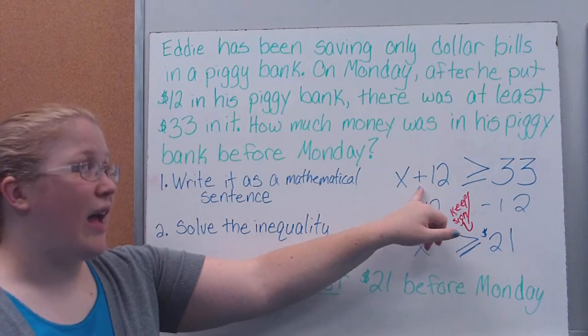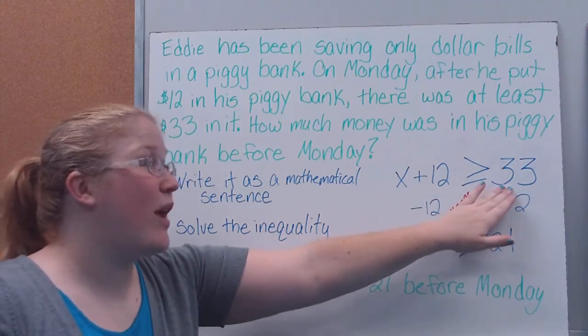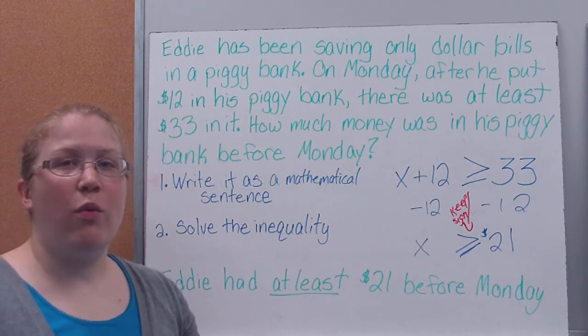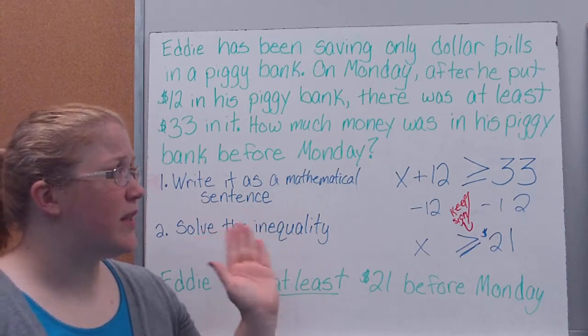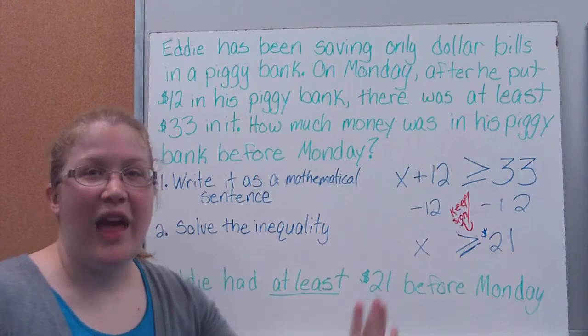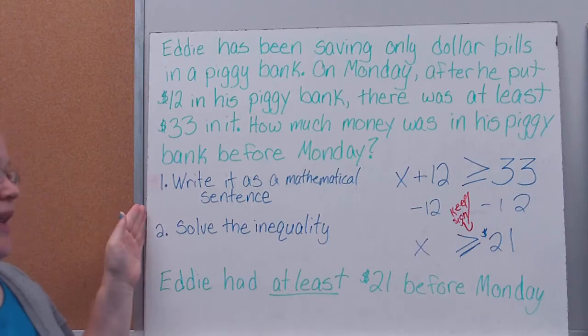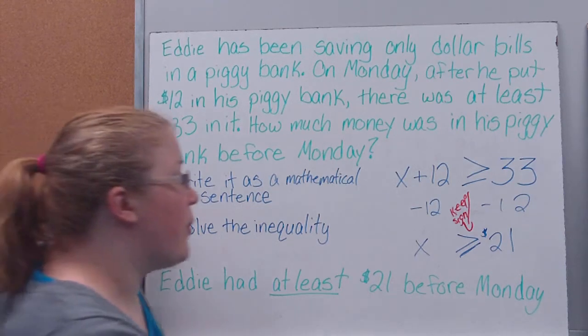So if I plug in 25, 25 gives me 37. 37 is greater than 33. So there's more than one number that'll work. If this was an equal sign, this would be the only number that works. That's the only difference. So don't let that confuse you when you're doing the problems. So Eddie had at least $21 before Monday.